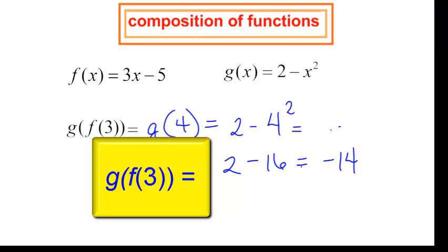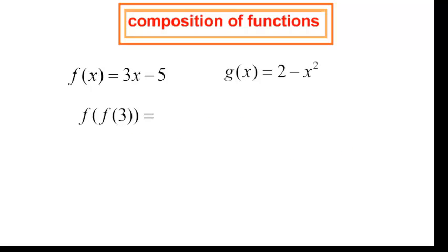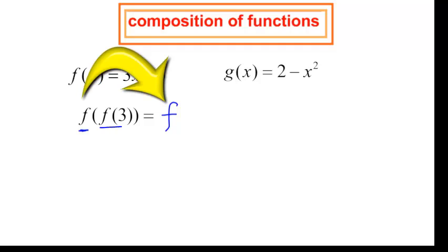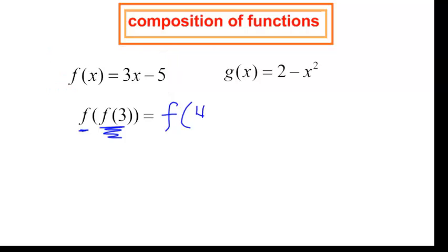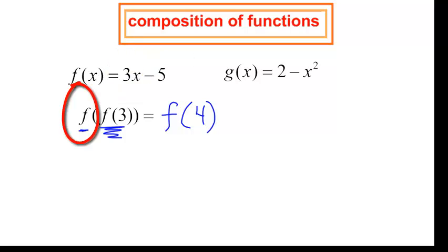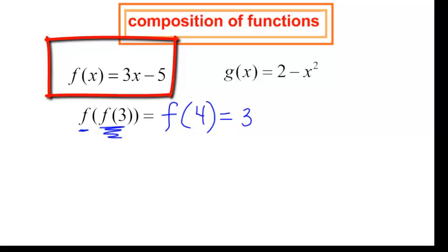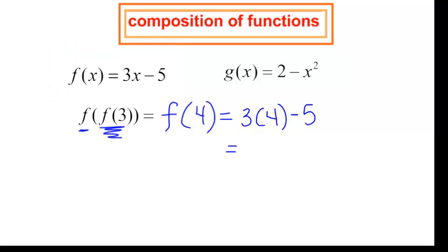Now I am looking for f at f of 3. The first f I am just bringing along — I am not doing anything with it yet. What I am working on is f at 3. We have done this before: it is 3 times 3, which is 9, and 9 minus 5 is 4. So f at 3 is 4. But I still have this outer f function, so now I am looking at f at 4, which would be 3 times 4 minus 5. That would be 12 minus 5, which is 7.